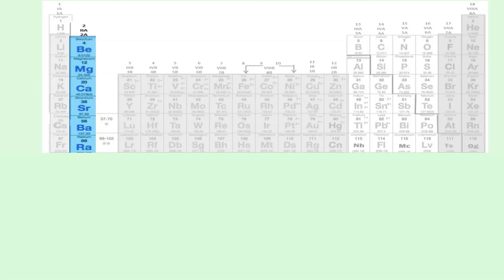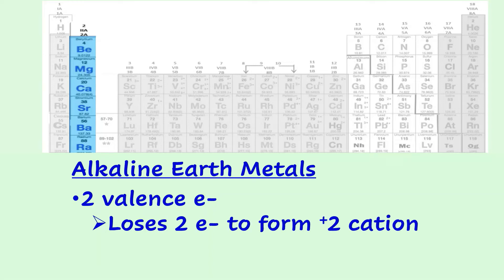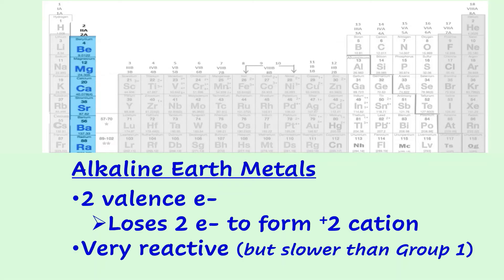Alkaline earth metals are in group two. Their electron configurations end in S2, giving them two valence electrons. It's easier for them to lose two electrons rather than scramble to pick up six more, so they tend to make cations with a positive two charge. They're very reactive, but react more slowly than alkali metals in group one.